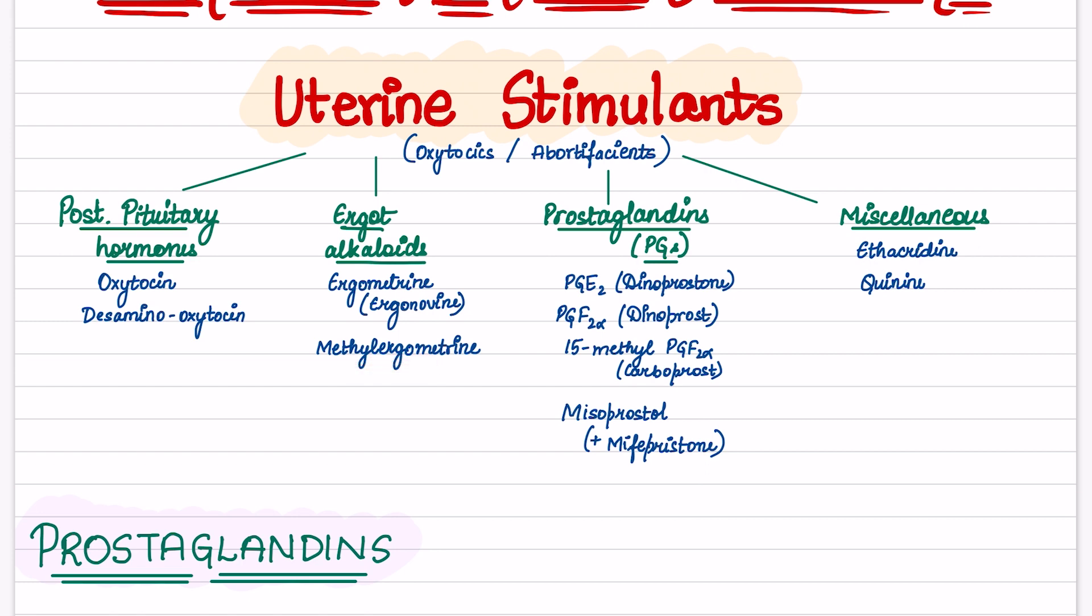In prostaglandins, we have PGE2 that is dinoprostol, PGF2-alpha that is dinoprost, 15-methyl PGF2-alpha is carboprost and mesoprostol and mephoprostol. Miscellaneous, we have ethacridine and quinine.